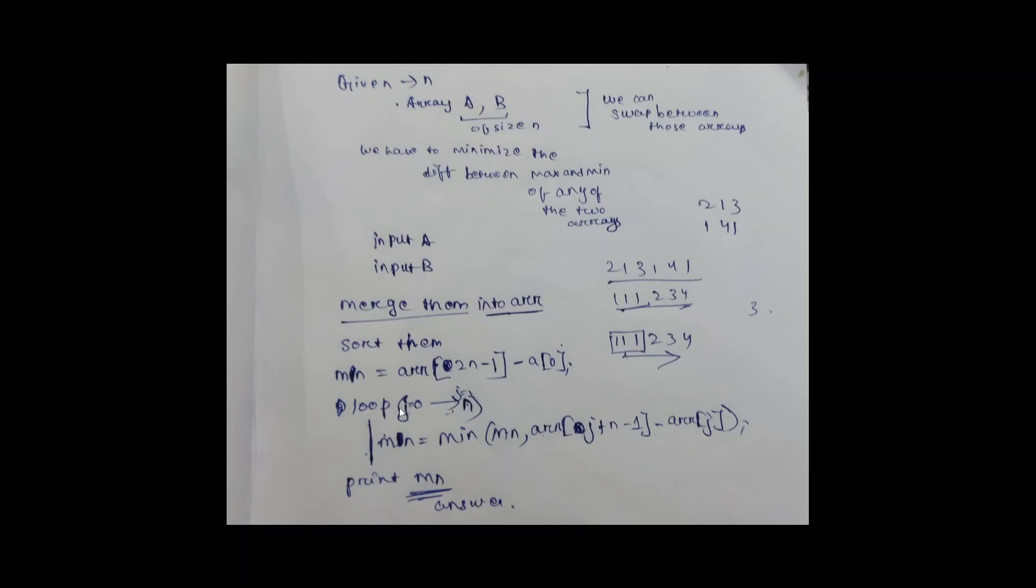Then we loop from 0 to N to minimize the value further. We find the minimum value by taking the minimum of the previous minimum and using a window size of N. In this case, the window size is 3.